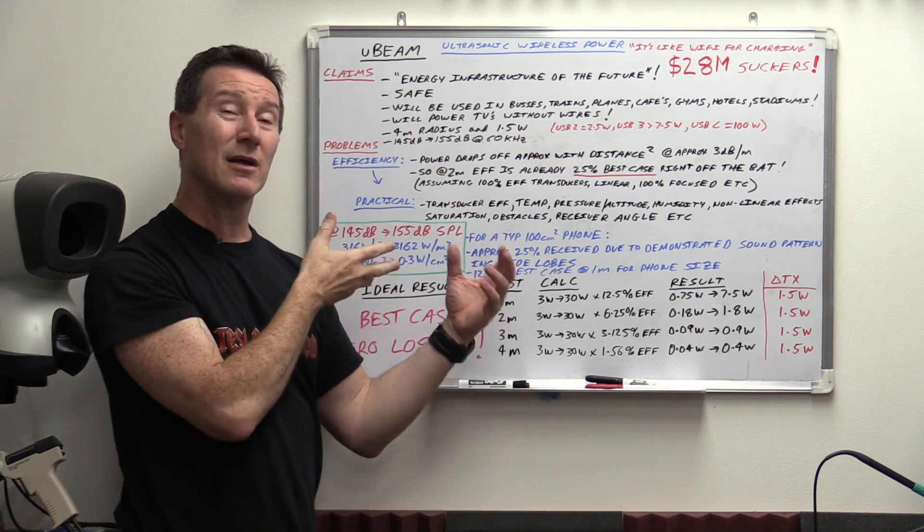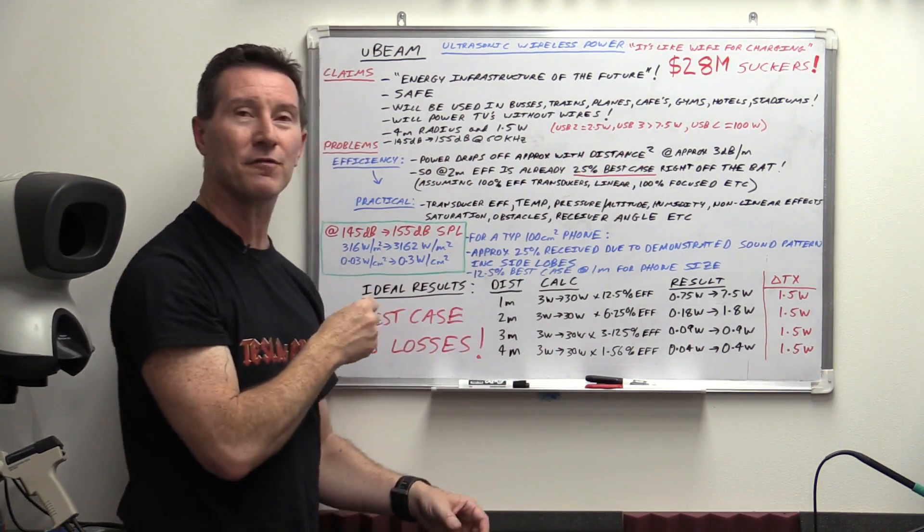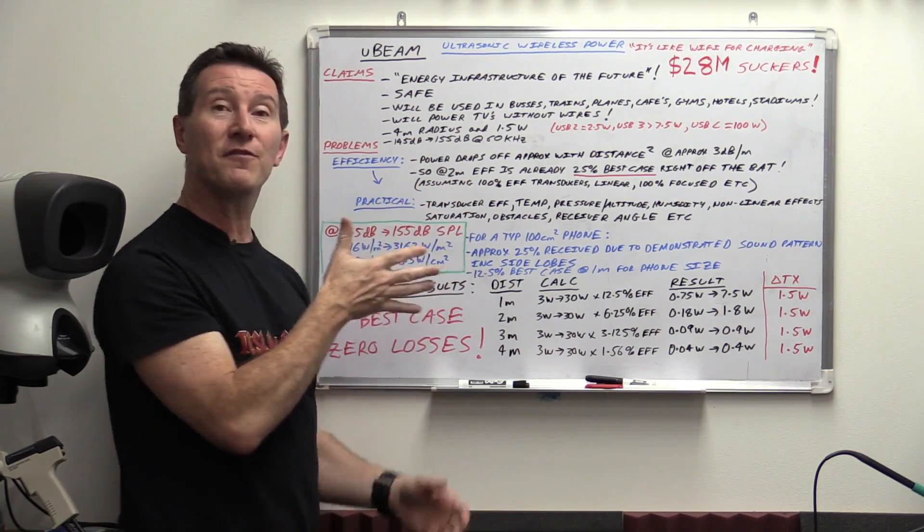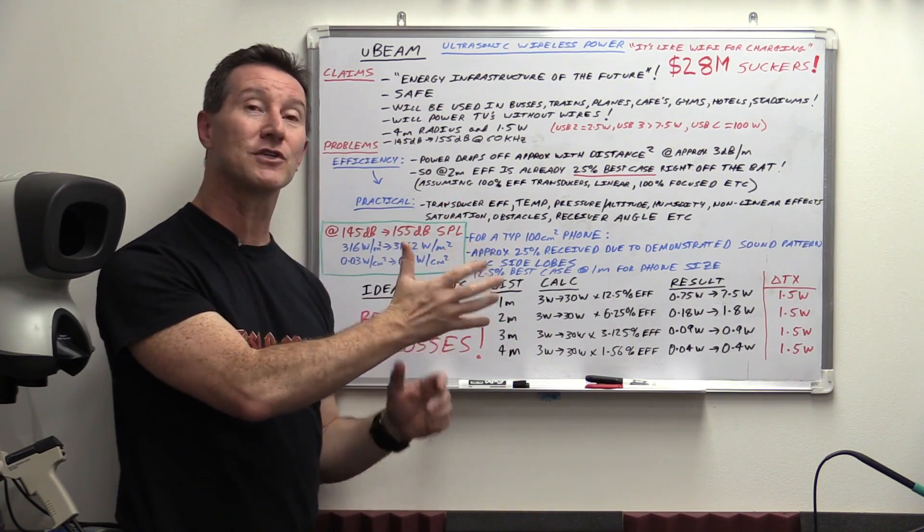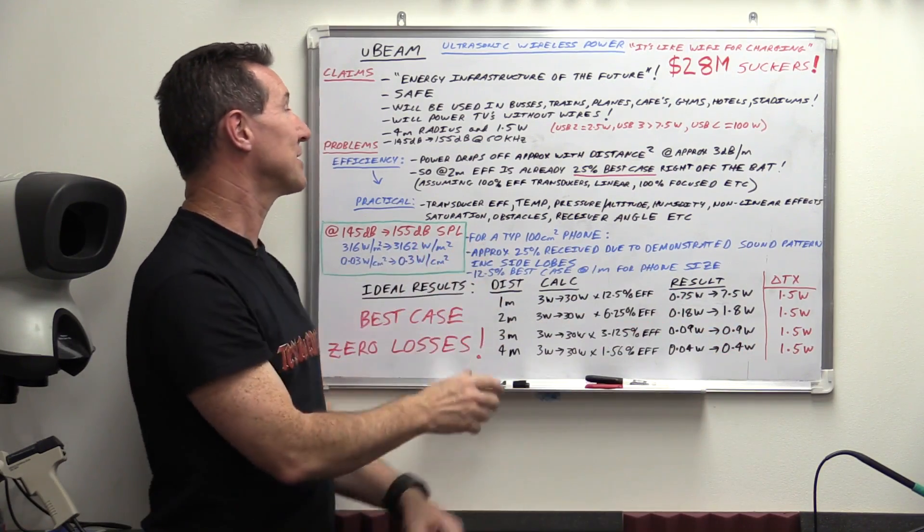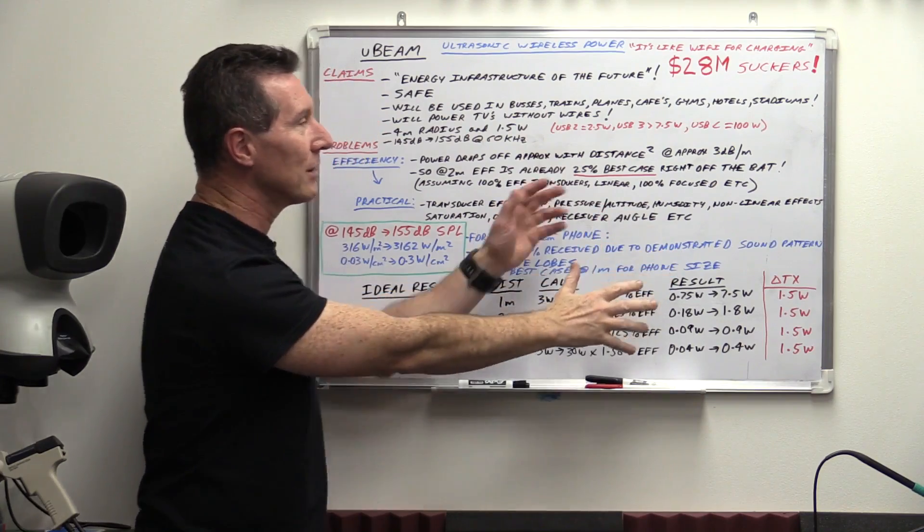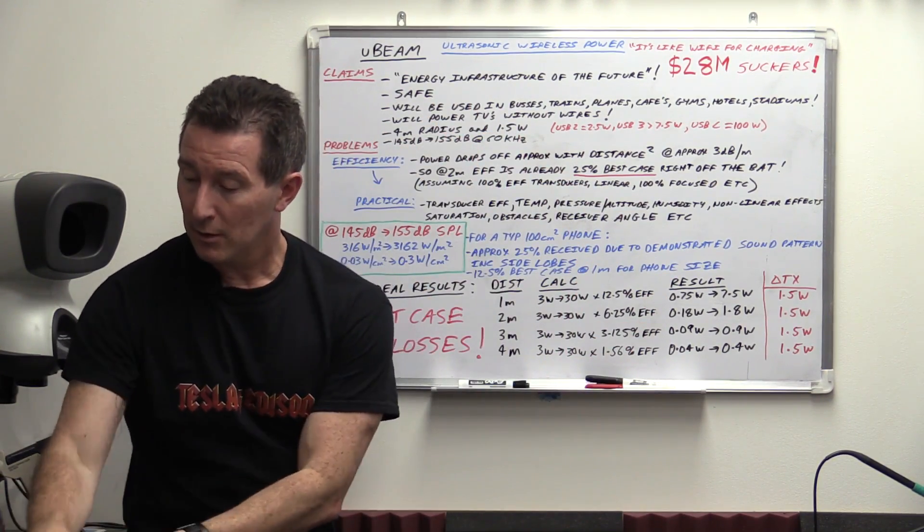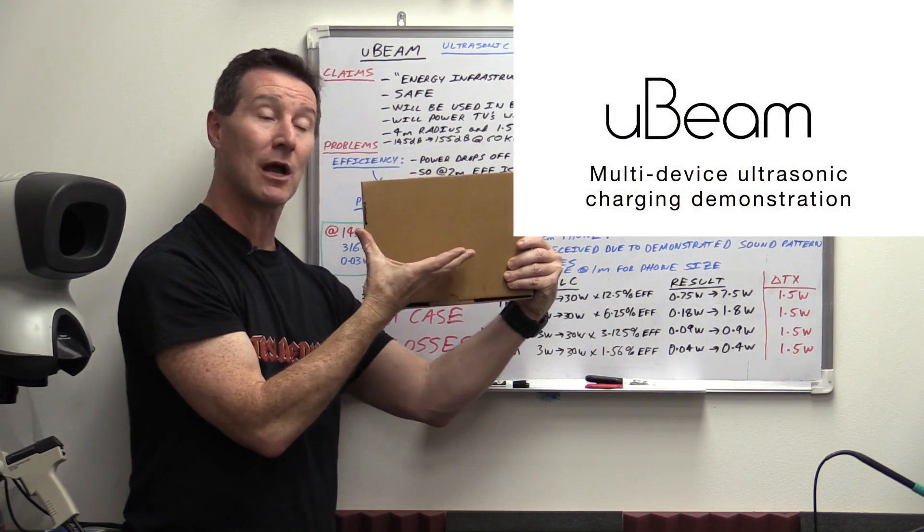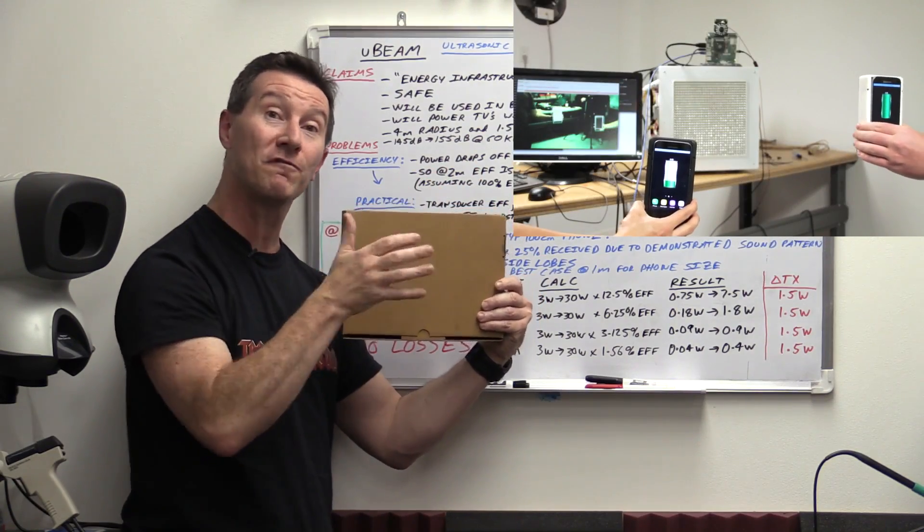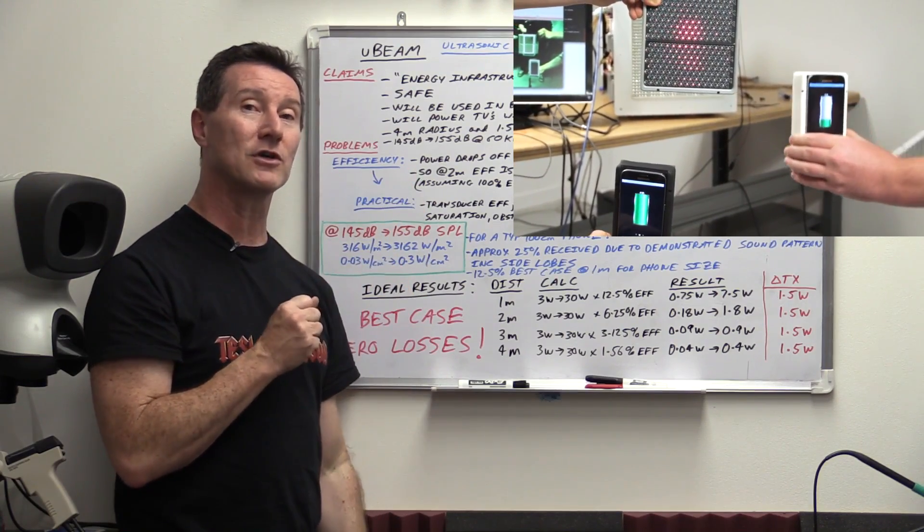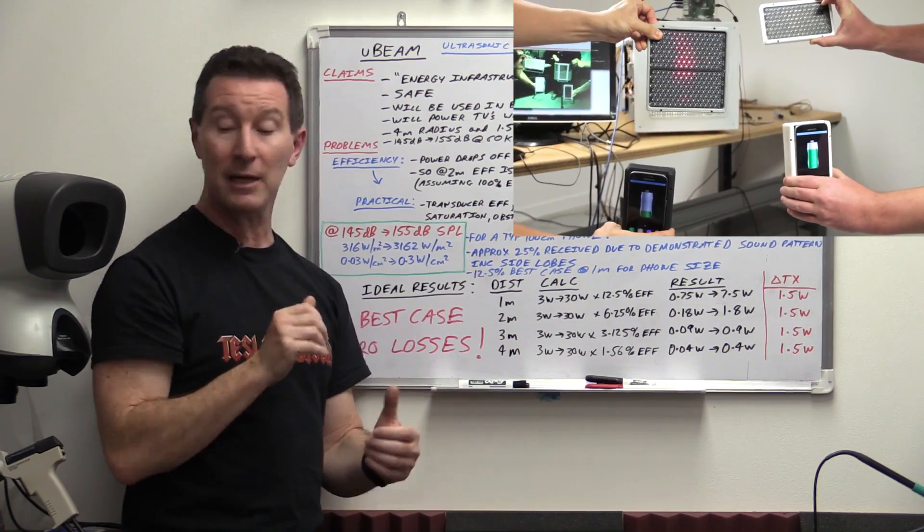The power with ultrasound in air drops off with square of the distance, approximately 3 dB per meter. Even if you're one meter away, just with air alone, no other losses, you lose 50%. It's only 50% efficient. At two meters, the efficiency's already 25% right off the bat. And that's assuming 100% efficient transducers, no non-linearities, 100% focused. If they've got an array, they can turn on only parts of it and get a smaller aperture size with different natural focus distance.